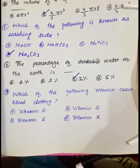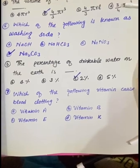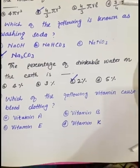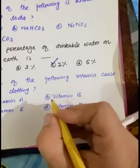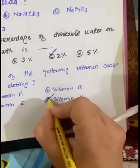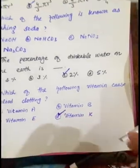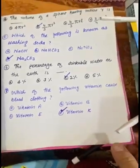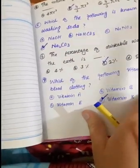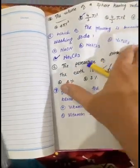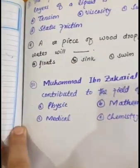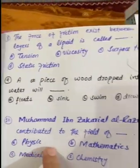MCQ number 7: which of the following vitamins causes blood clotting? Option A: Vitamin A, option B: Vitamin B, option C: Vitamin E, option D: Vitamin K. The correct option is D — Vitamin K, which produces a type of protein that helps in blood clotting.